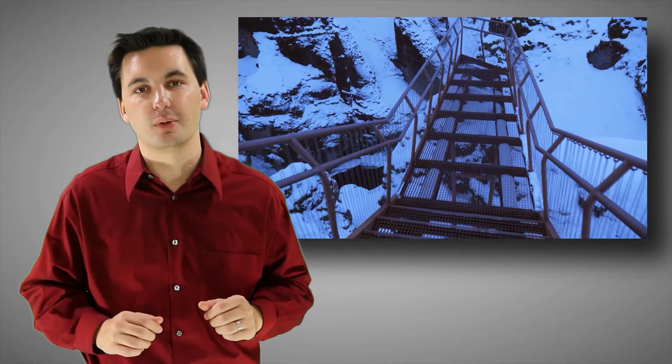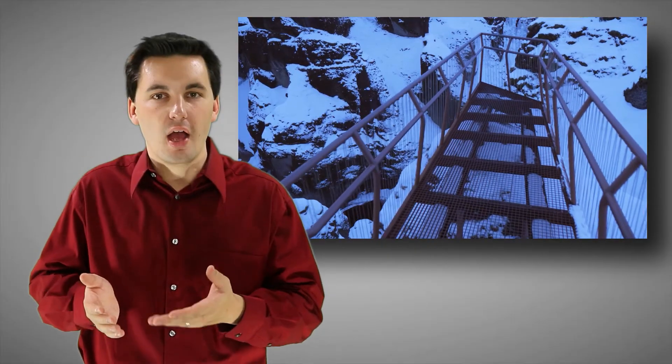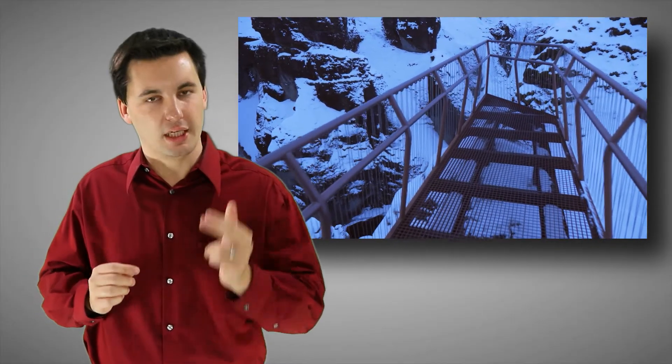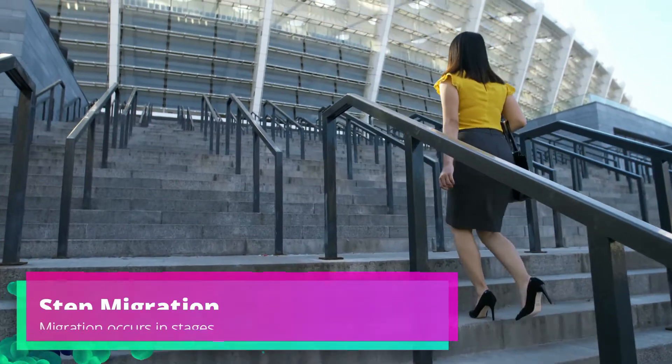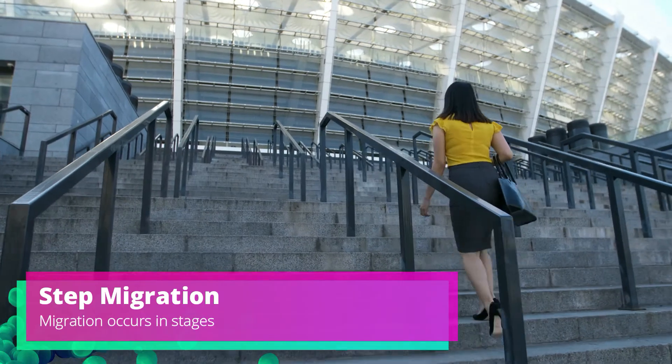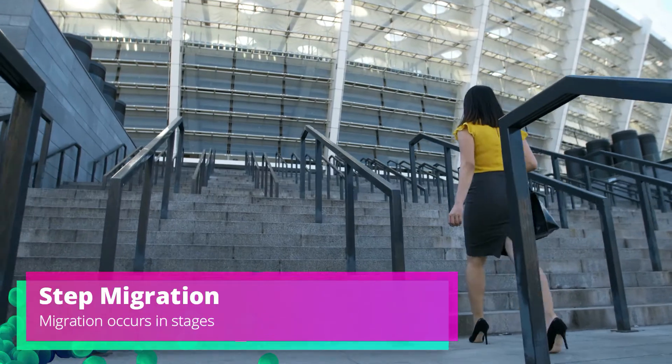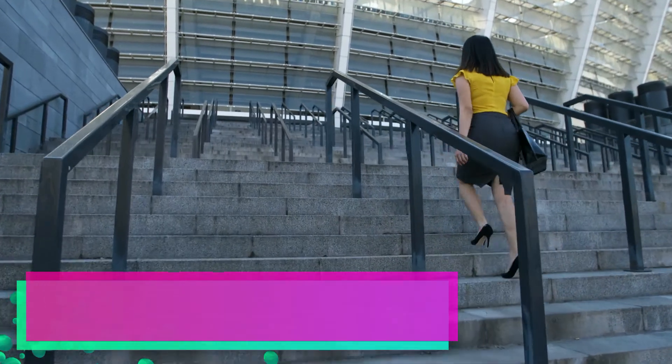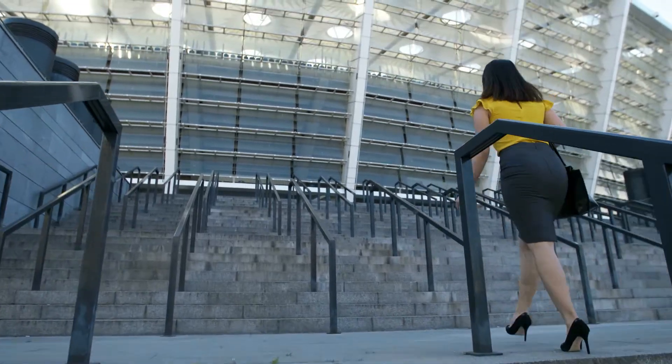The next type of migration is step migration. And we've talked about this one on the channel before. But when you're thinking of step migration, what I want you to visualize is a staircase. Think of a staircase and you walking up it. On the top of the staircase is your destination. If I'm at the bottom of the staircase, for me to reach the top, I have to walk up the different stairs, the different steps. It's the exact same thing that happens in step migration. I have an end goal in mind, and for me to get there, I have to be able to cross different geographic locations.